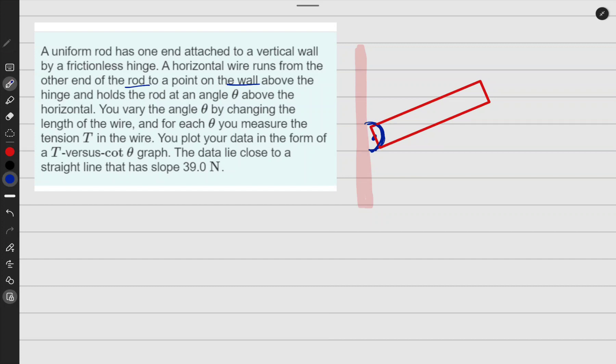Okay, remember here we have the hinge and we will have a rope running from here to here. What do they call it? Wire, let me just write wire. Holding it at an angle theta—angle theta, which here it's also angle theta. Okay, doesn't matter much. Okay, above the horizontal. You vary the angle—okay, now they're changing this angle that we have here.